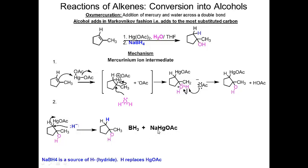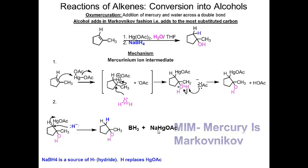The side products are BH3 and a mercury-sodium compound. To summarize both reactions: BAM — boron is anti-Markovnikov; MIM — mercury is Markovnikov. Anytime you see these reagents you'll get Markovnikov or anti-Markovnikov addition of H and OH across the double bond accordingly.